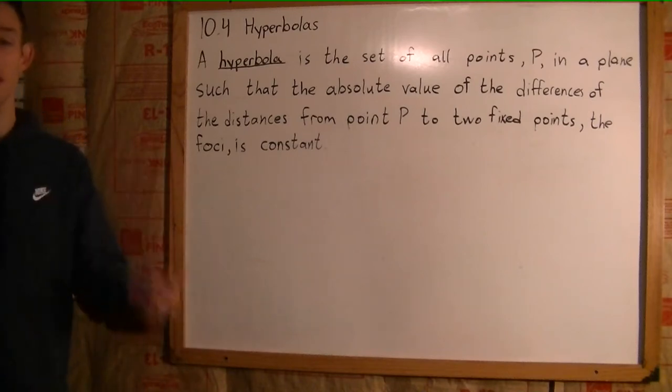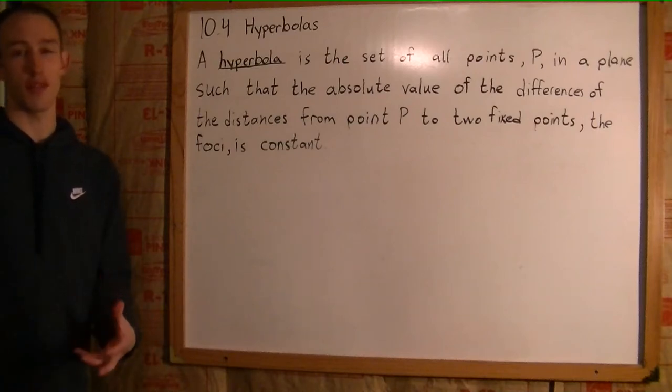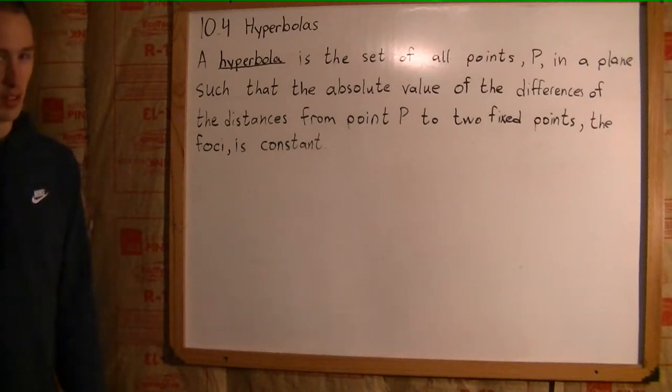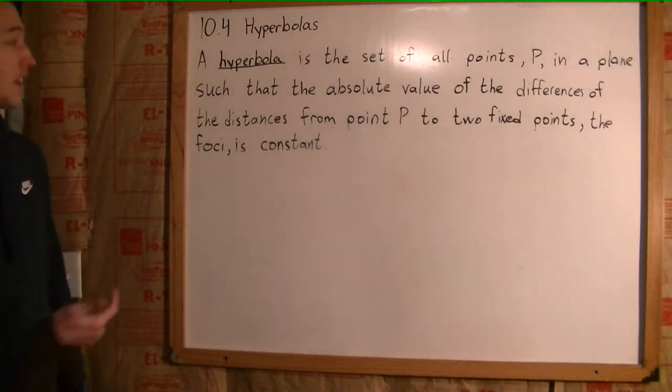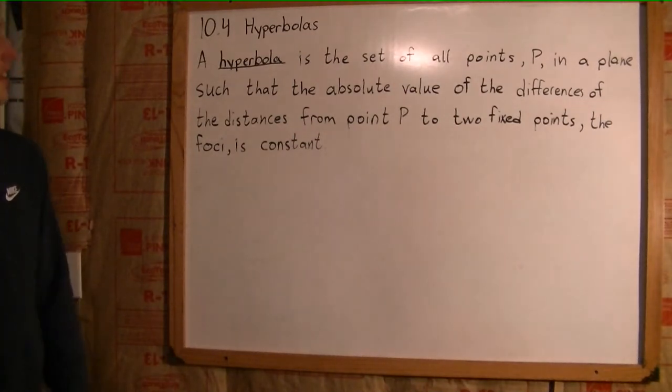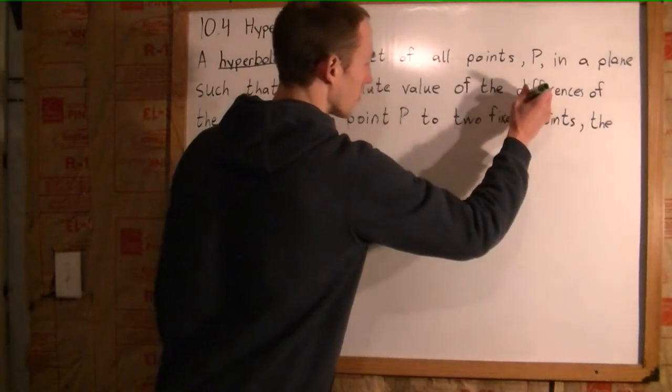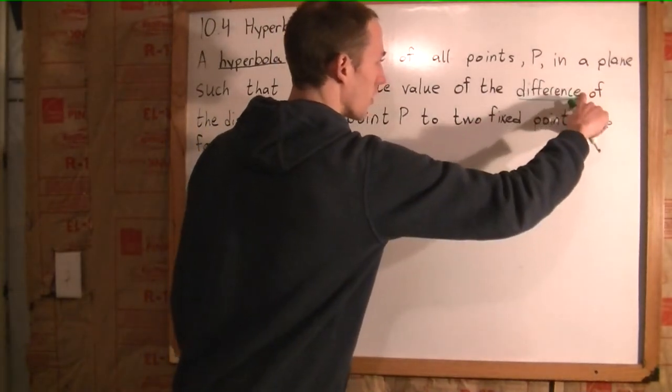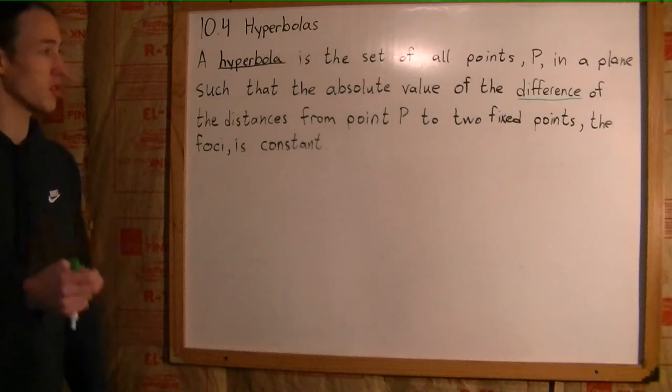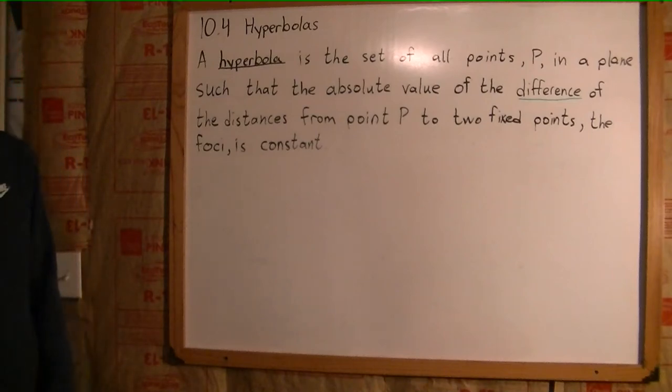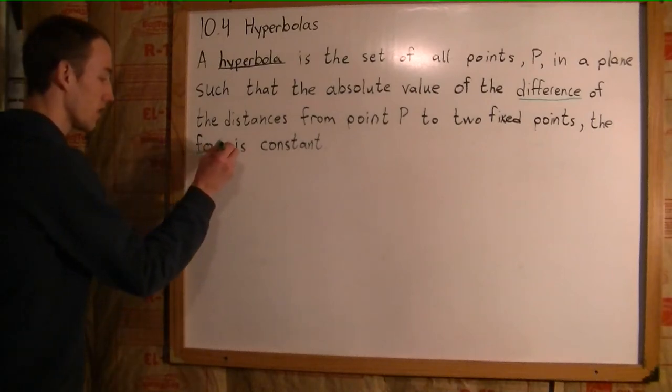We're going to start with our basic definition here. And then we'll start breaking down the different vocabulary words associated with the hyperbola. So a hyperbola, and this is kind of long, is the set of all points P in a plane such that the absolute value of the difference of the distances from point P to two fixed points, the foci, there's that word again, is constant.